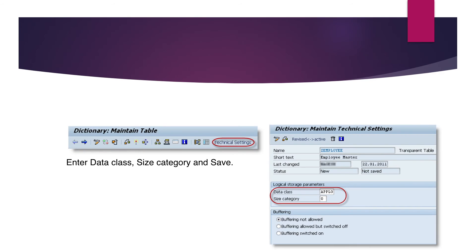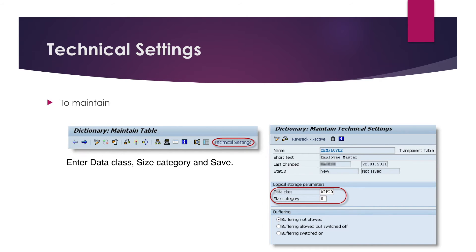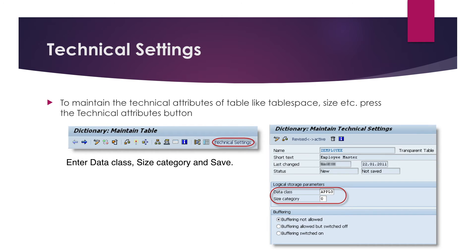After adding the fields, we have to maintain the technical settings — attributes of the table like tablespace, size, etc. Press the technical attributes button on the application toolbar. There you will see name, short text, last change, status, and data class size category. For data class, enter APPL0, L01, L02, or L03 based on your need. Then set the size category to 0 and click the save button.